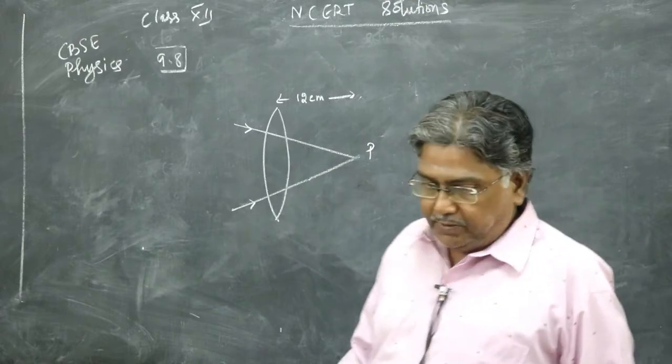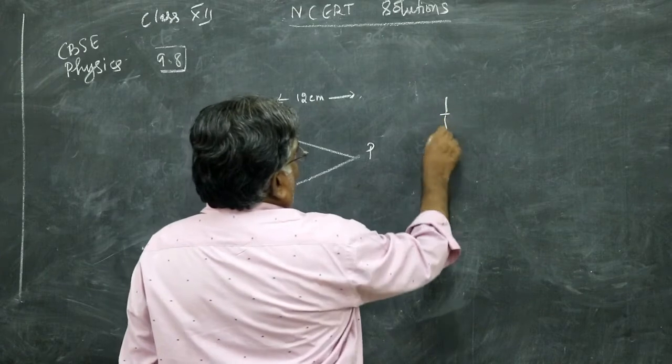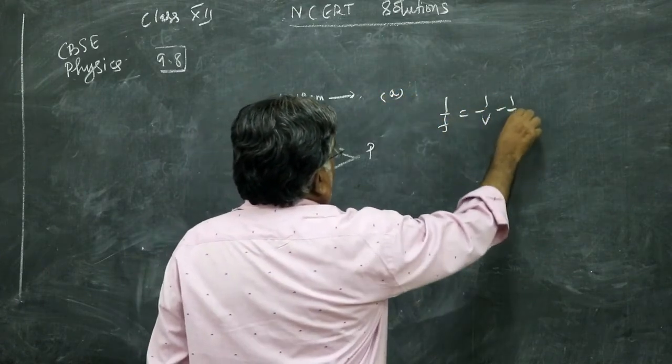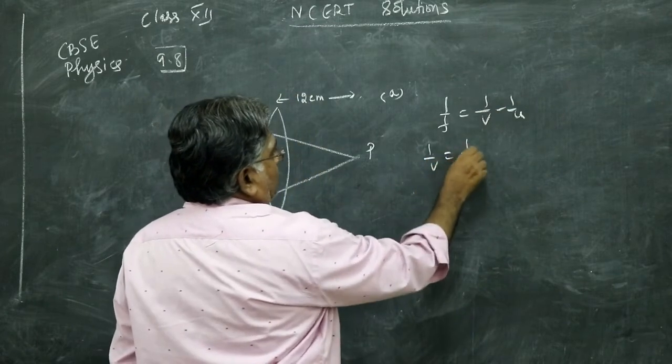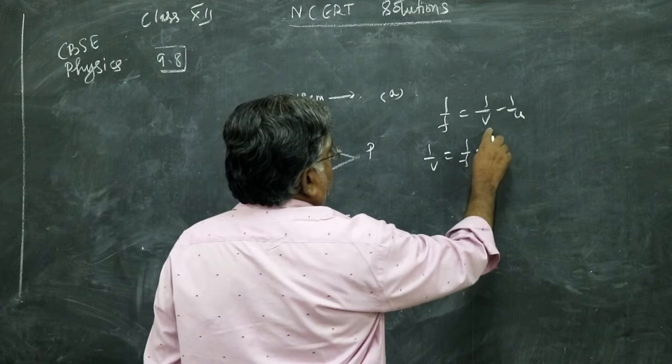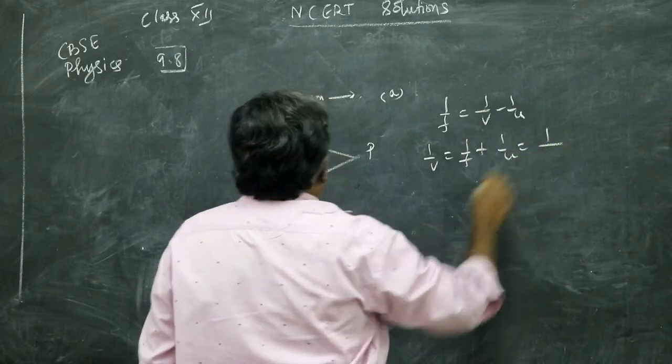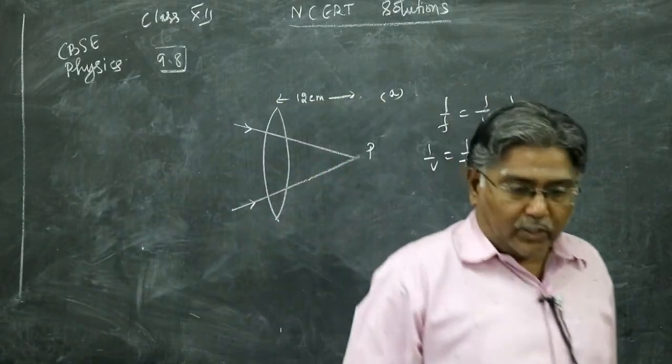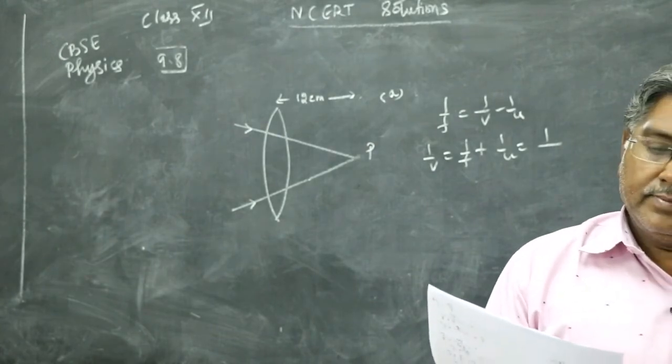So use the lens equation: 1 by F. This is subdivision a. 1 by V minus 1 by U. You are supposed to find V, so 1 by V is equal to 1 by F plus 1 by U. 1 by focal length of the convex lens is given to be 20 centimeter.